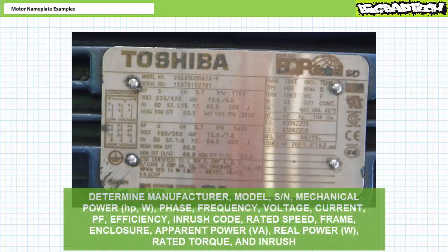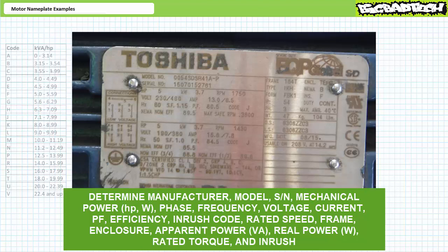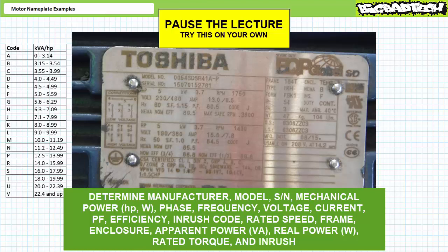Here's the data I want you to find: manufacturer, model, serial number, mechanical power in horsepower and watts, phase, frequency, voltage, current, power factor, efficiency, inrush code, rated speed, frame, and enclosure. Lastly, calculate apparent power input, real power input, rated torque, and inrush, and check your work. Here's the table for inrush. Hopefully you wrote the formulas down — if not, rewind the lecture, find the formulas, and write them down in your notebook. You are now officially on your own. Pause the lecture and give this your best shot.